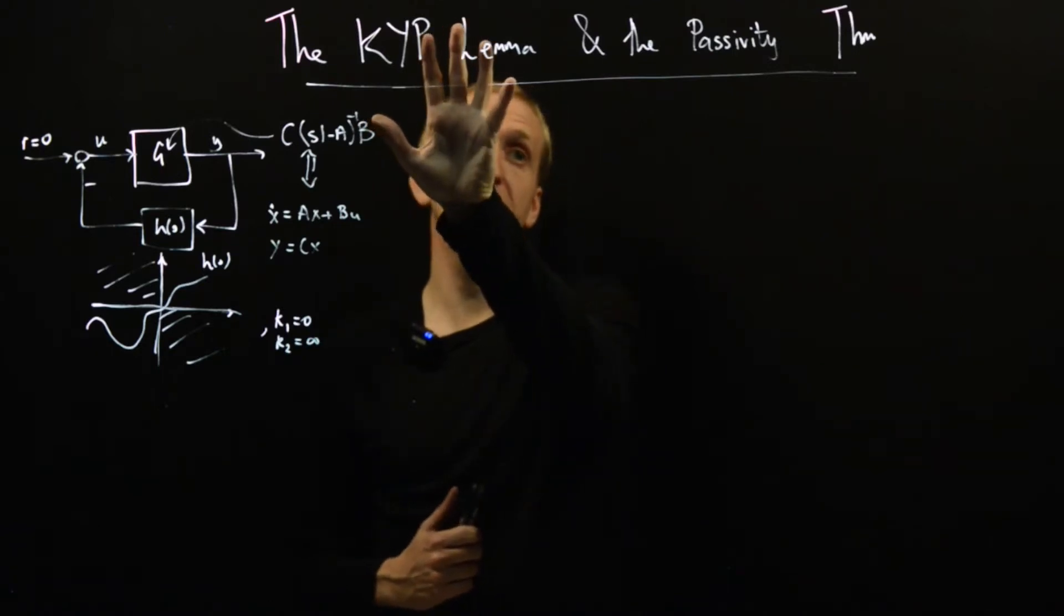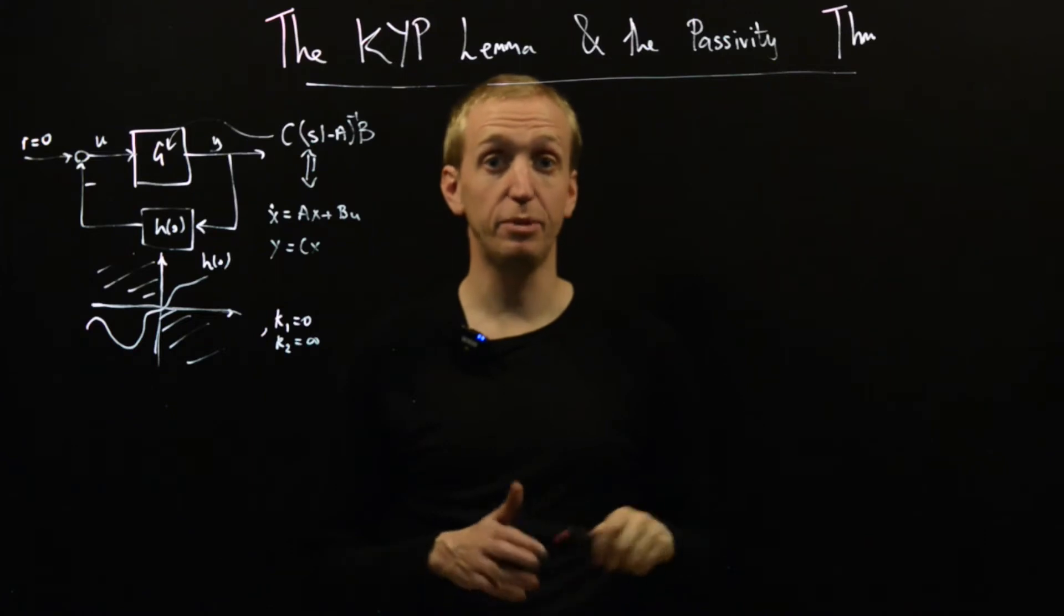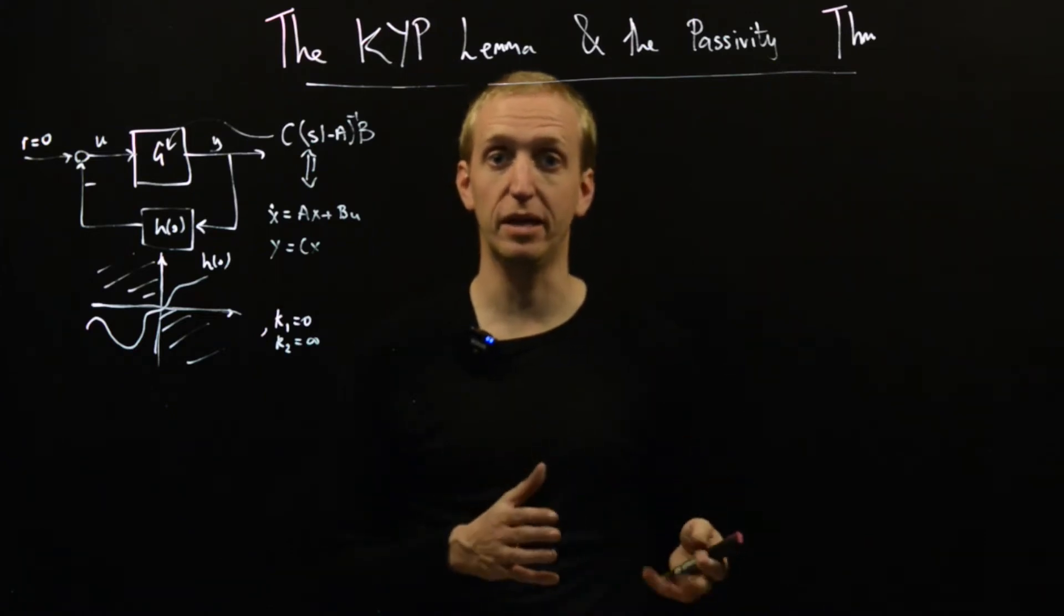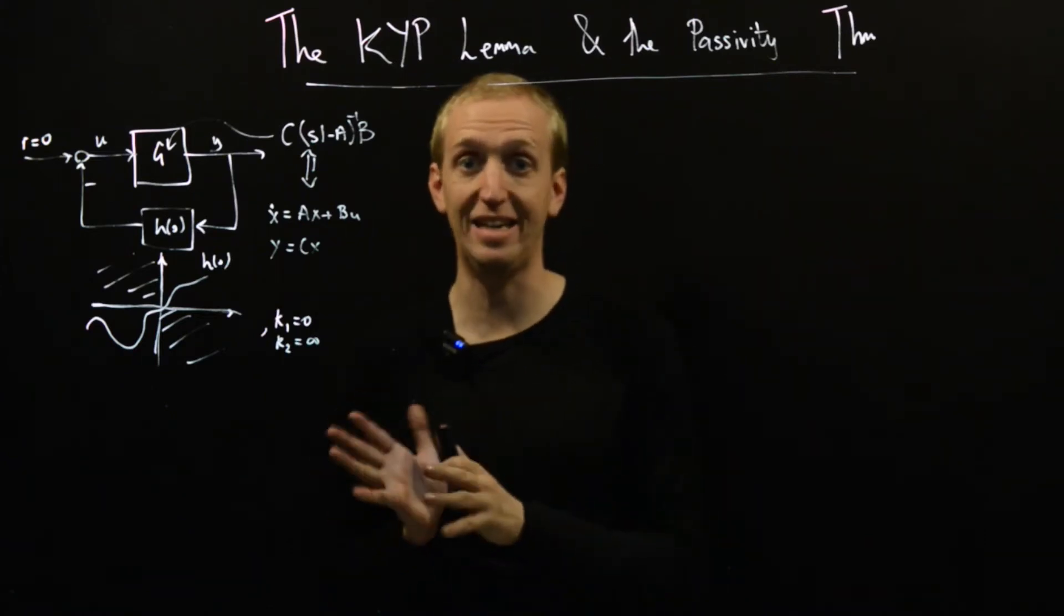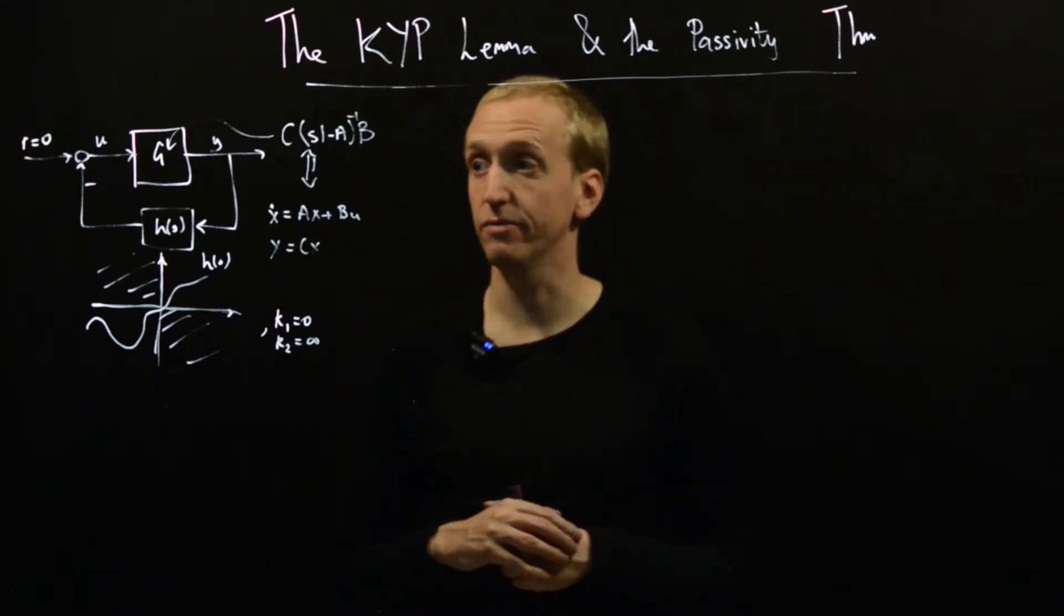I want to talk to you about this thing called the KYP lemma and use it to prove what is called the passivity theorem. The passivity theorem is actually a fancy name for the special case of the circle criterion that we saw at the end of the last lecture.